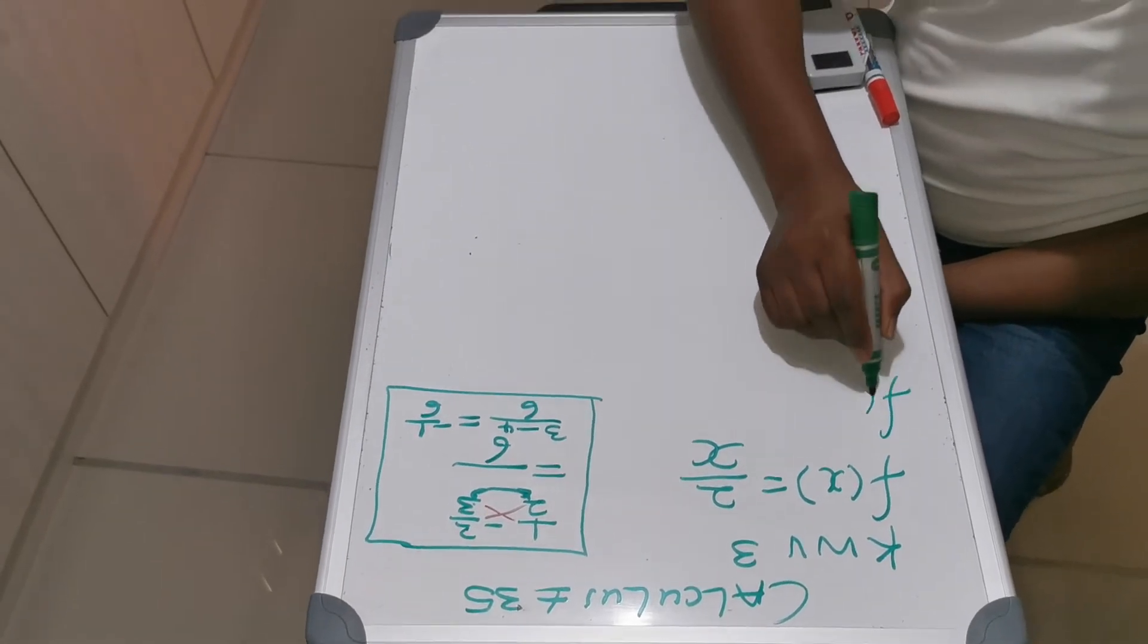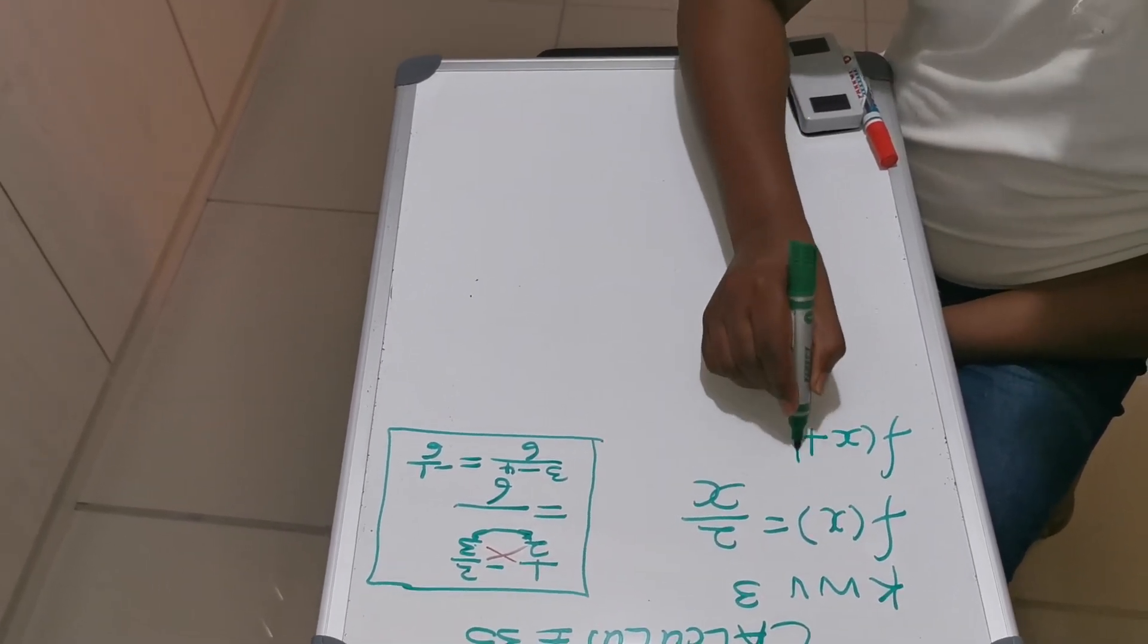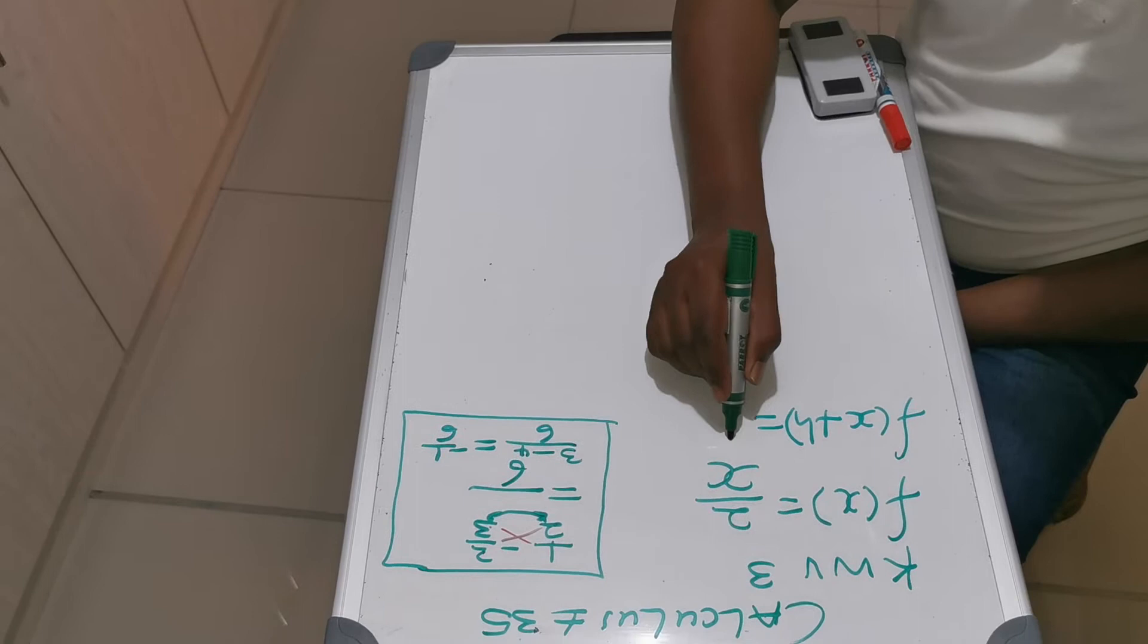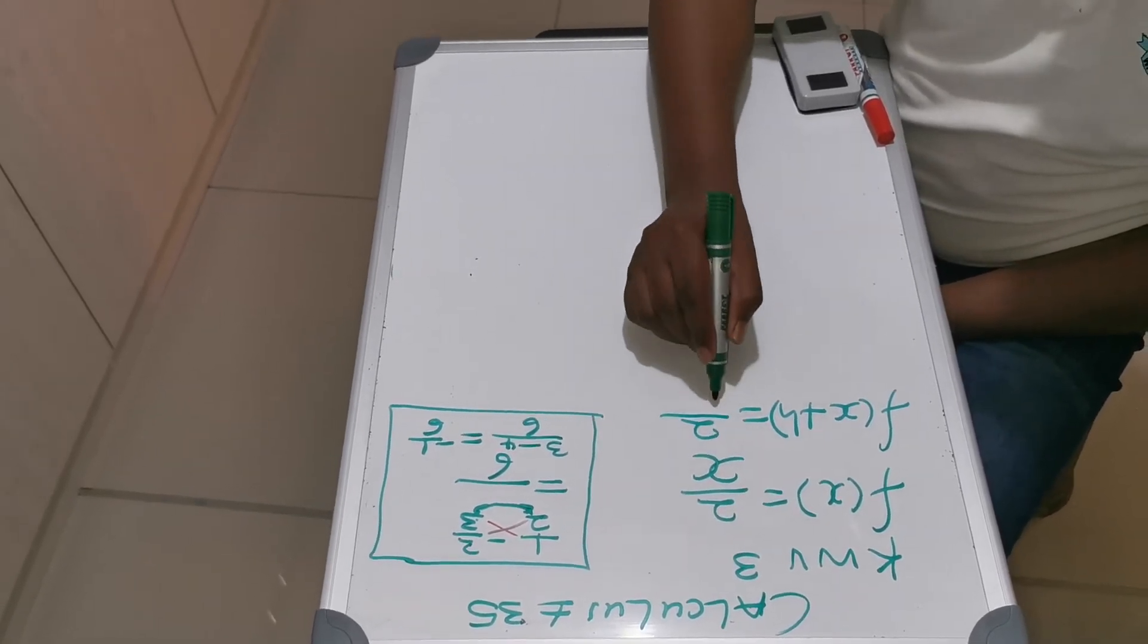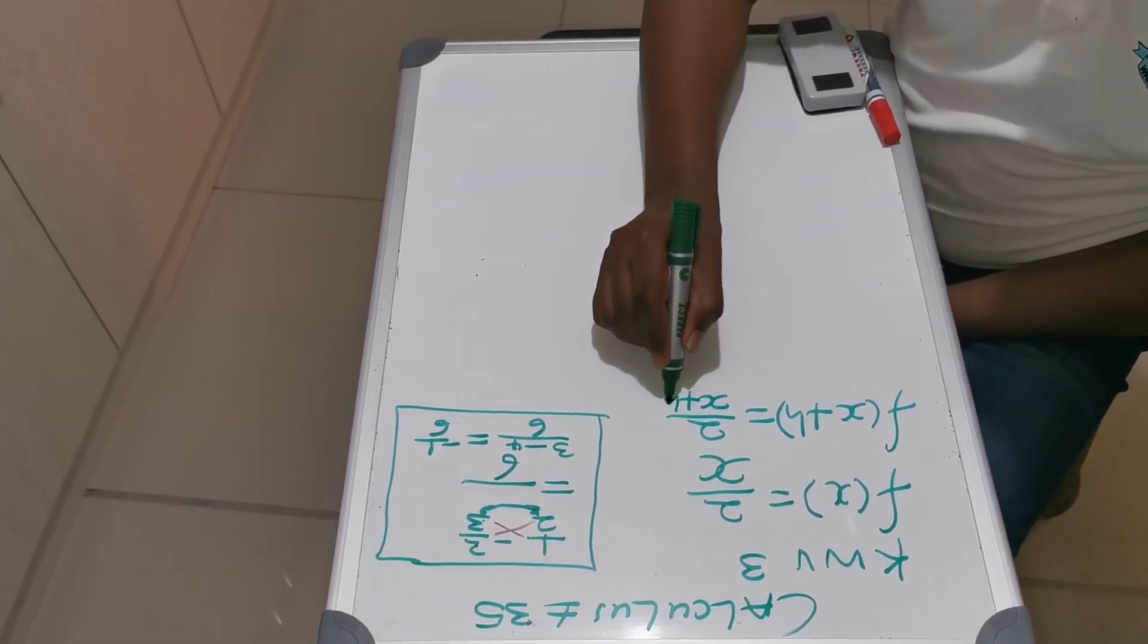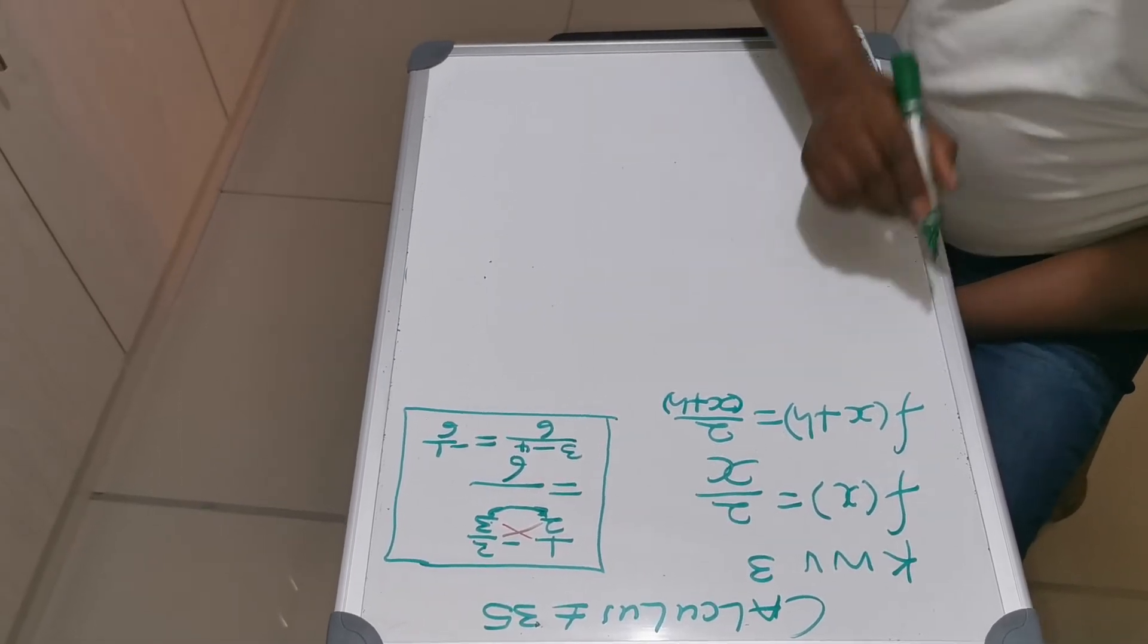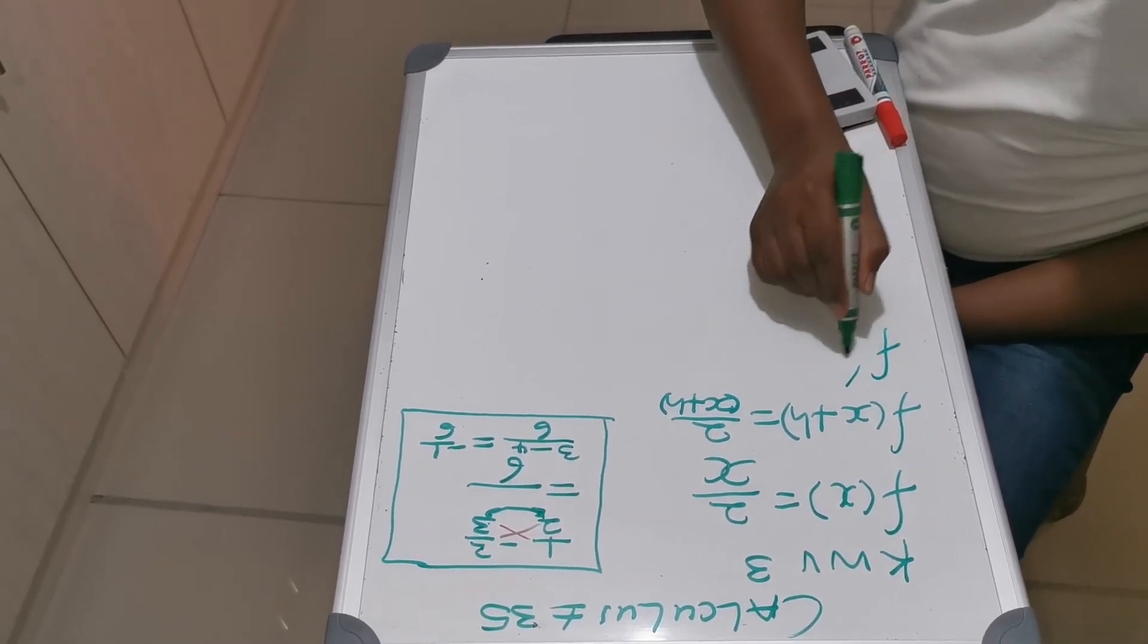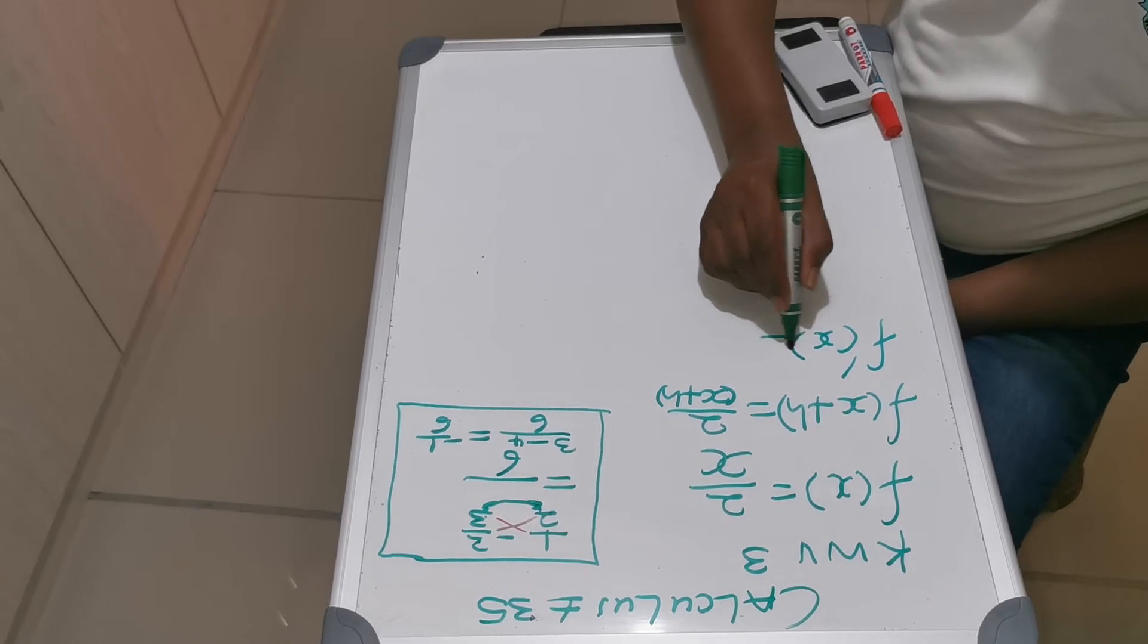Now, first principle, we know where there is X, you put this: 2 over X, you put X plus H. Okay, then this goes to our formula. You copy the formula as it is. This is limit.